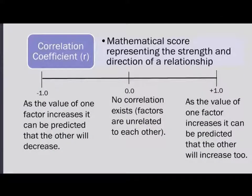The correlation coefficient ranges from negative one to positive one. If it's a positive number, it indicates a positive relationship, meaning that as one variable increases, the other increases as well — they're moving in the same direction. If it's a negative correlation, the variables are inversely related: as one increases, the other decreases. It's important to remember that positive doesn't mean good and negative doesn't mean bad — it only describes the direction the variables are moving relative to each other.